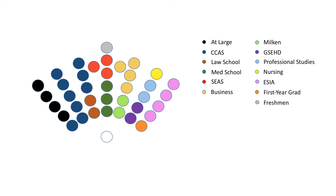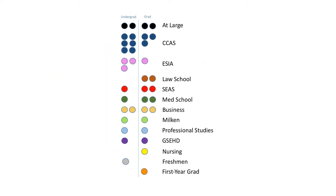The executive vice president acts as chair of the senate. Both undergraduate and graduate students are represented equally within the SA, with 19 senators each. Now that you understand the structure of the SA and how it works, be sure to turn out and vote this week.